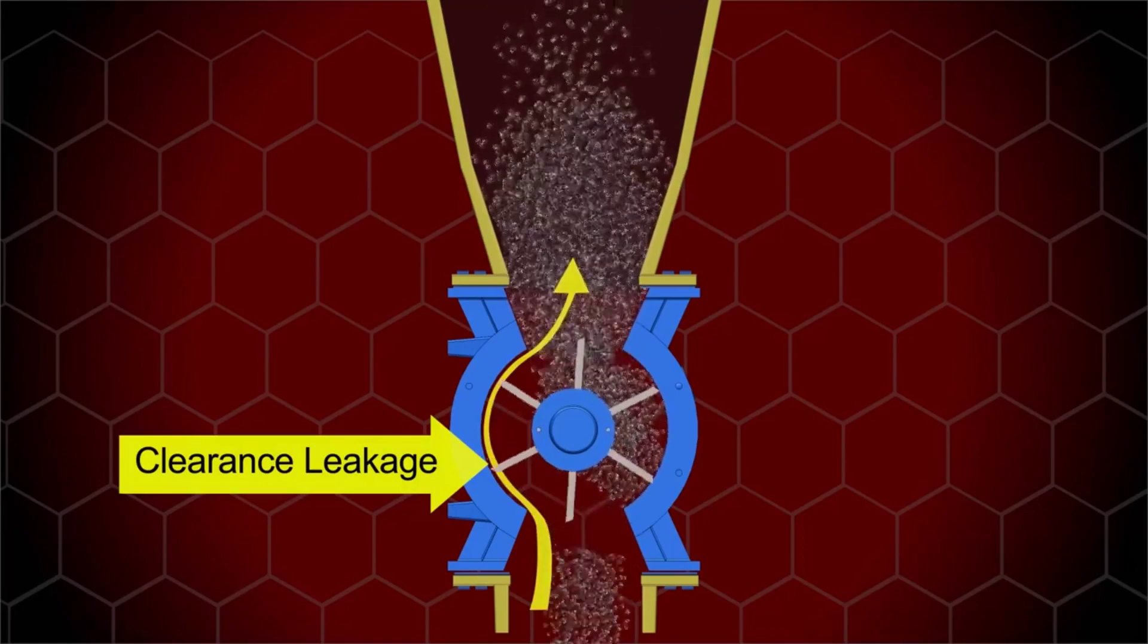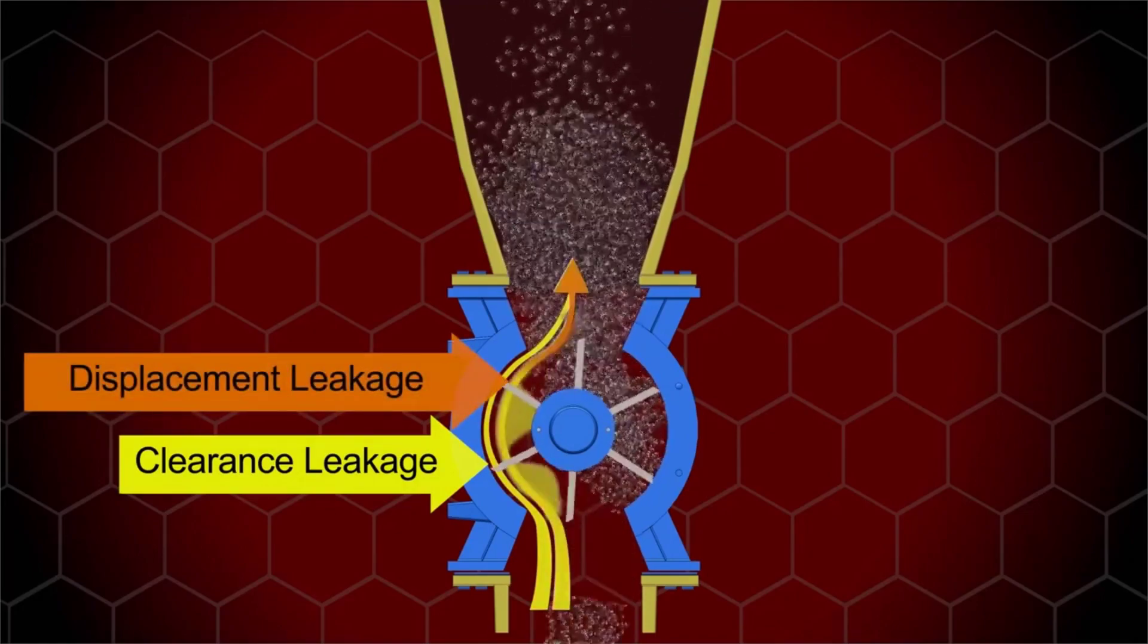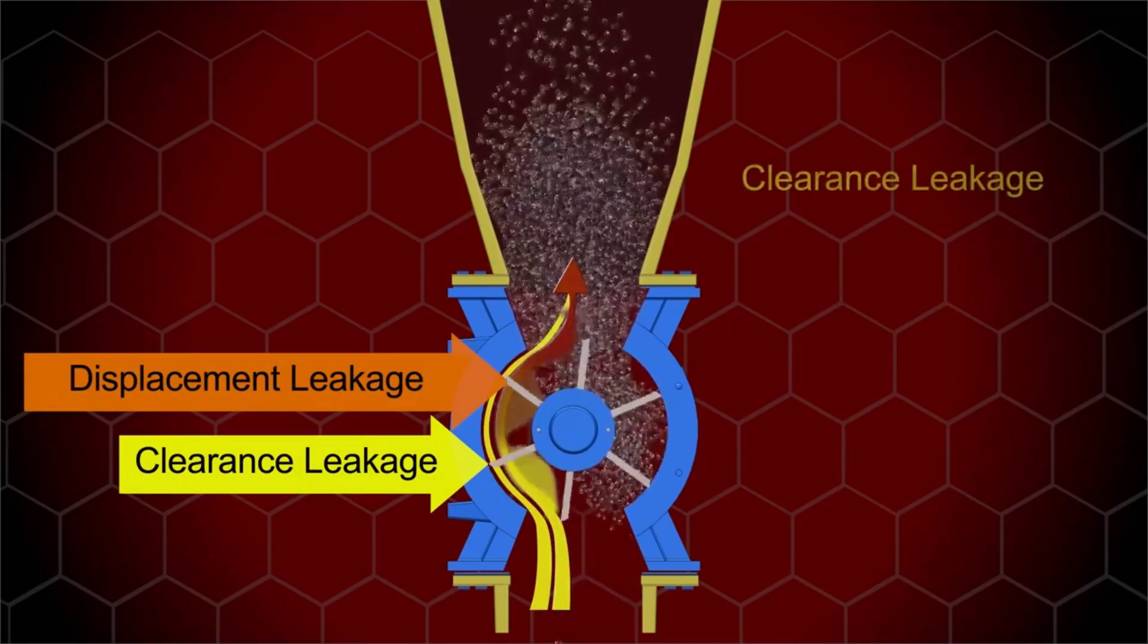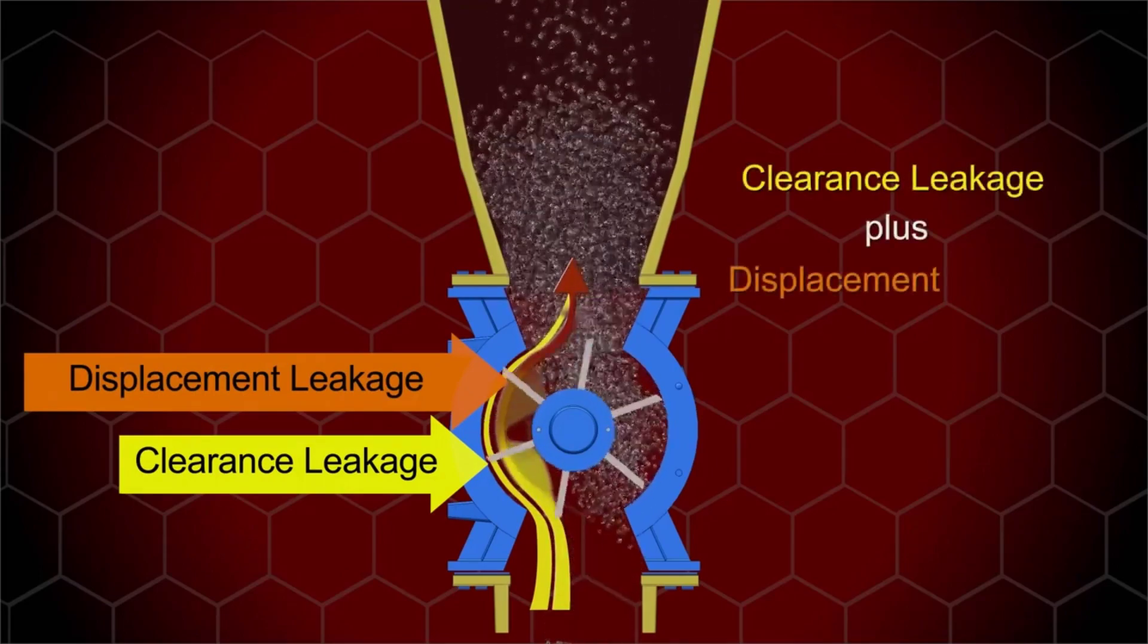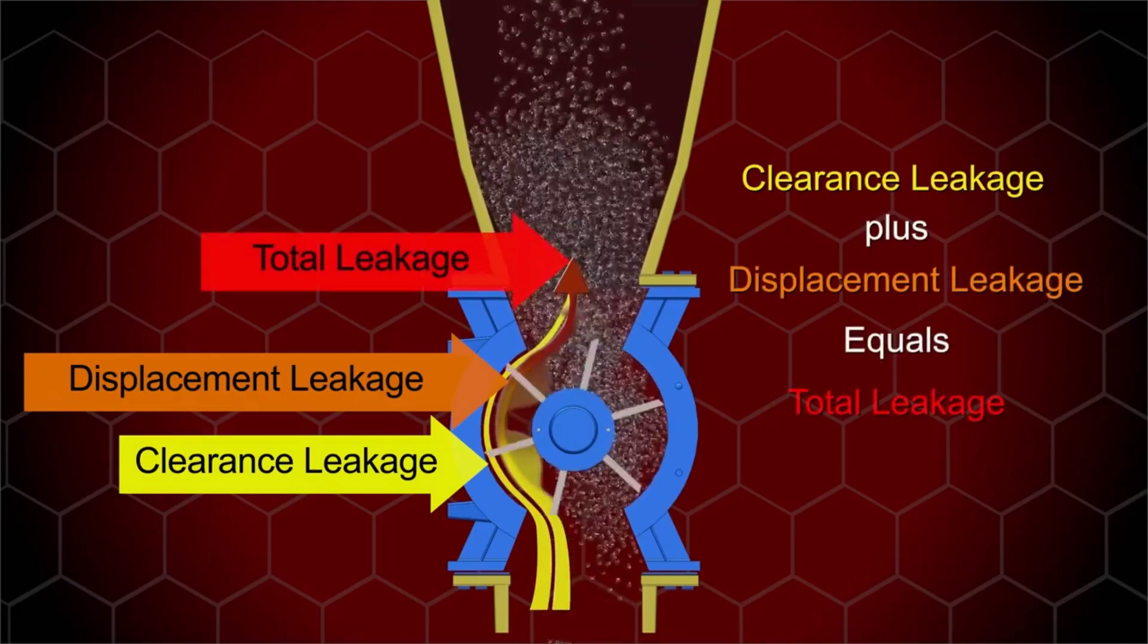There are two types of valve leakage. The first is clearance leakage, which occurs around the perimeter of the valve. The second is displacement leakage, which is the air that is trapped in the empty rotor pockets. Clearance leakage plus displacement leakage equals total leakage.